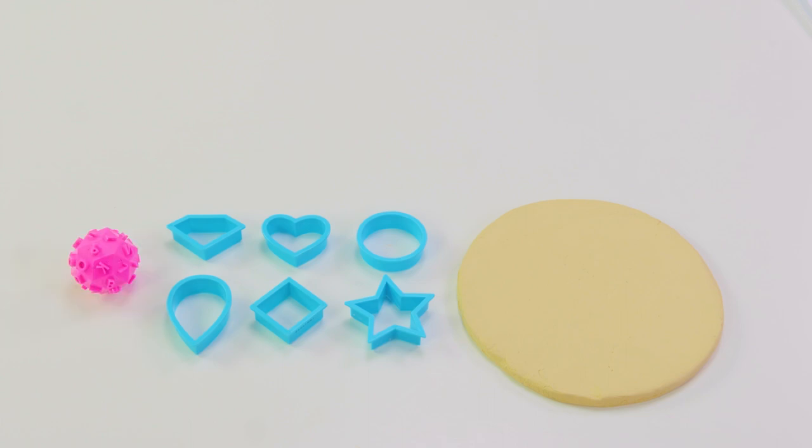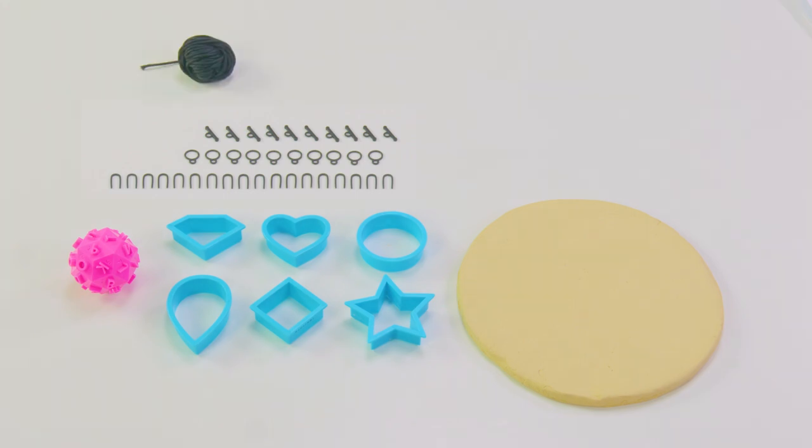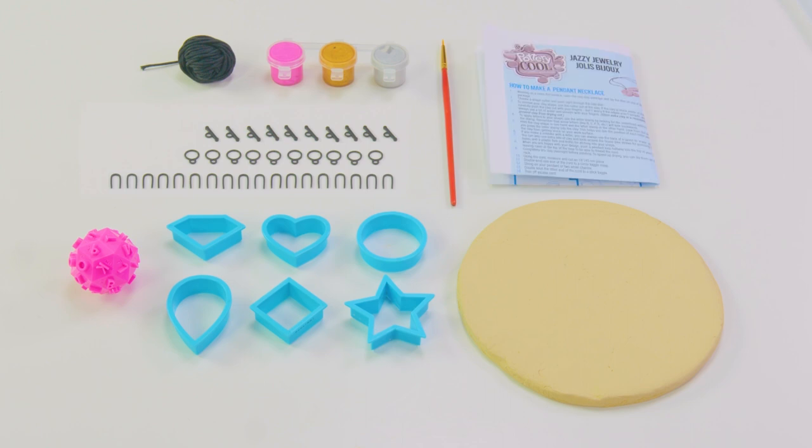First, let's look at what you get in the kit. One clay disc, six cookie cutters to shape your jewelry, one letter stamp, 10 sets of bracelet and necklace toggle clasps, 20 pendant hooks, five yards of cord, three colors of metallic paint, one paintbrush, and the instruction guide.